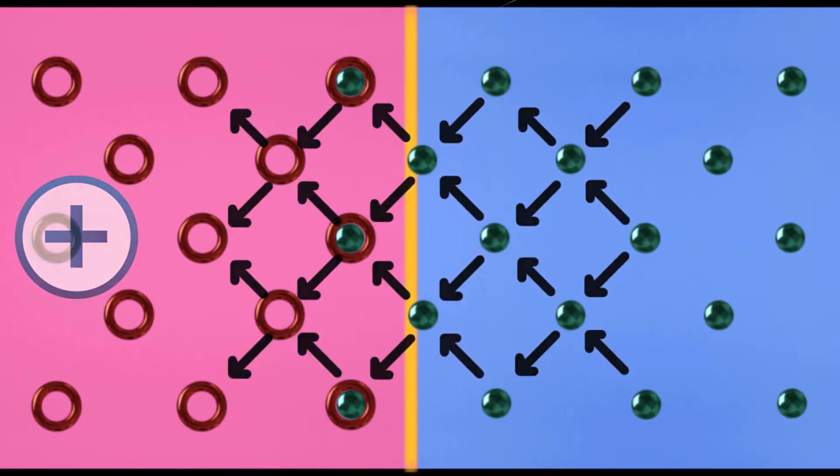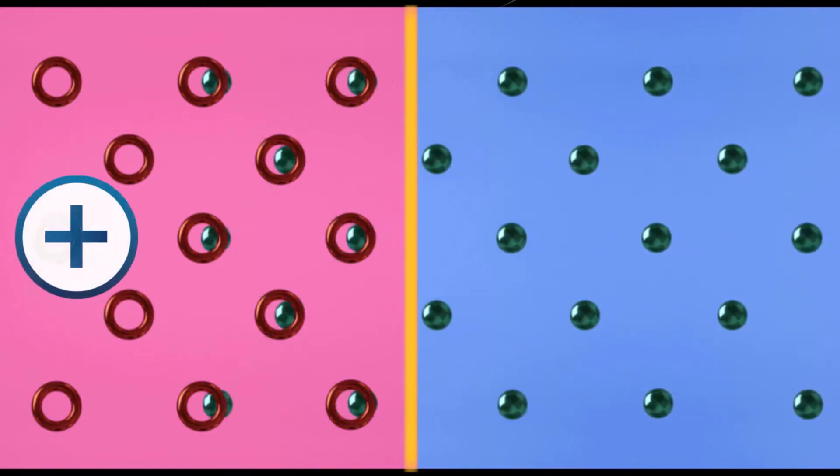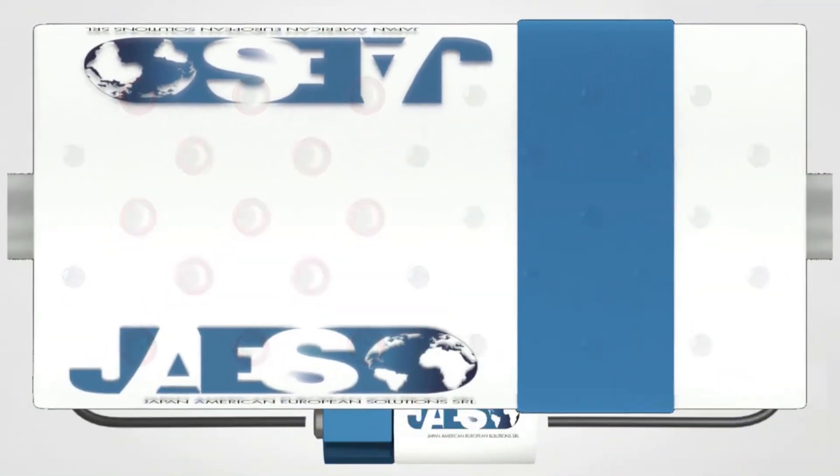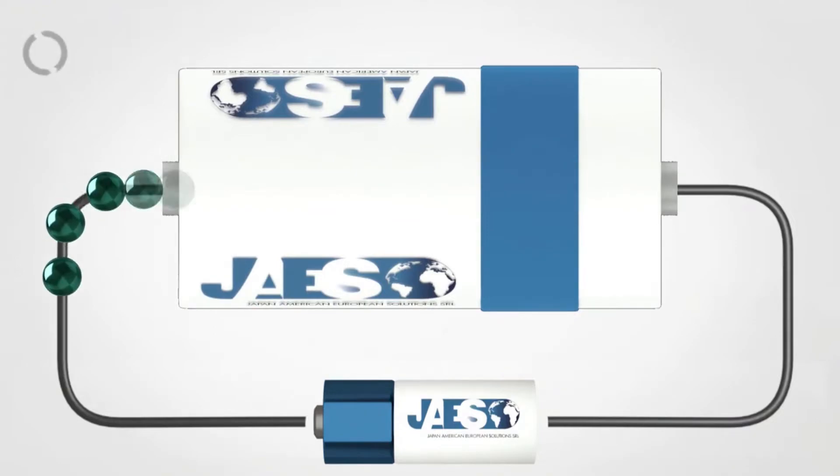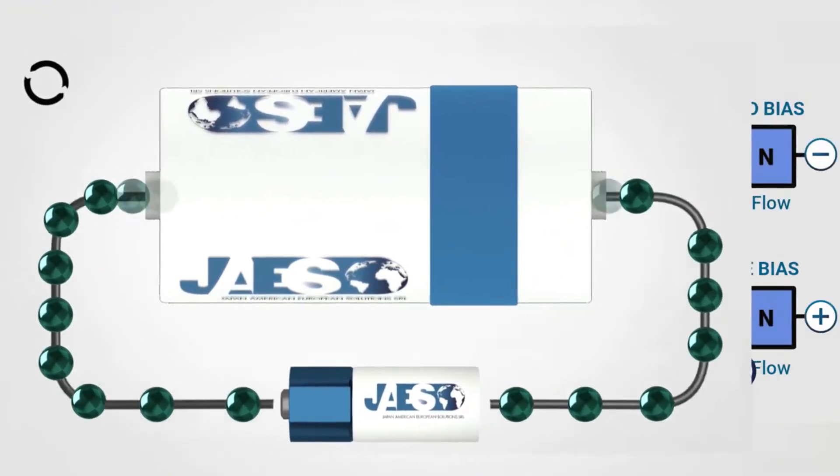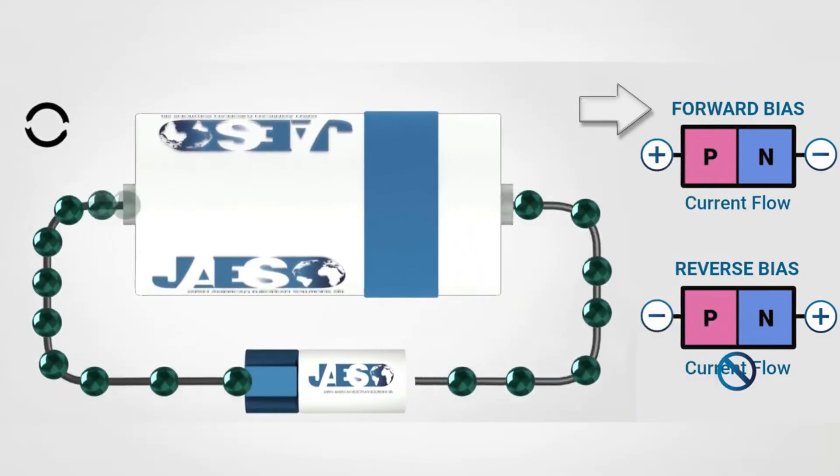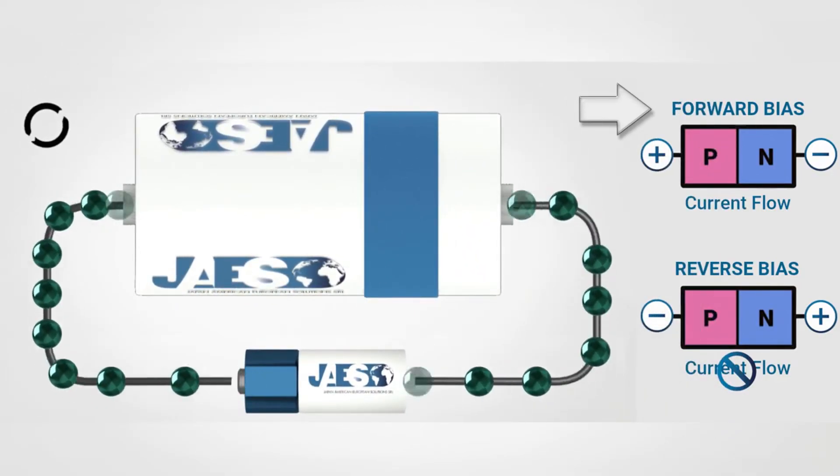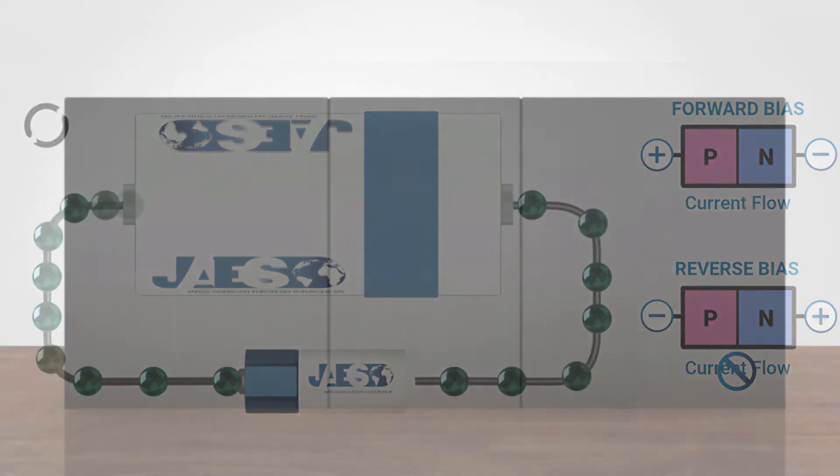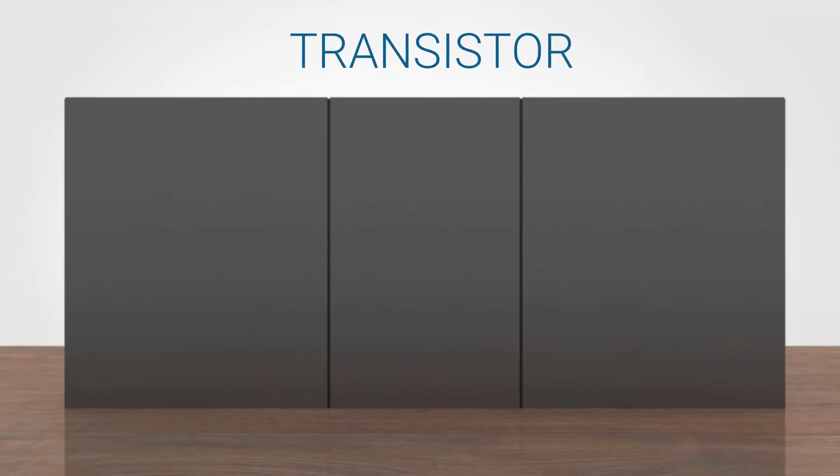Thanks to the attraction of the positive pole of the battery, they continue to occupy the subsequent holes and thus flow out of the diode through the electrical circuit. This condition is known as direct polarization of the diode. The condition of direct diode polarization allows us to understand in a simpler way the transistor's operation principle.